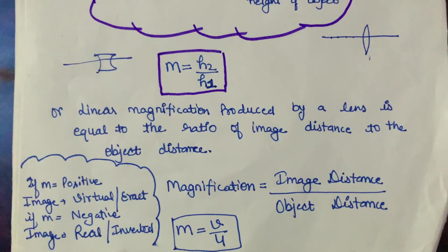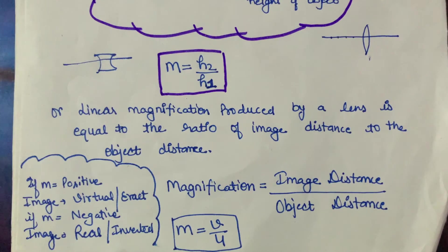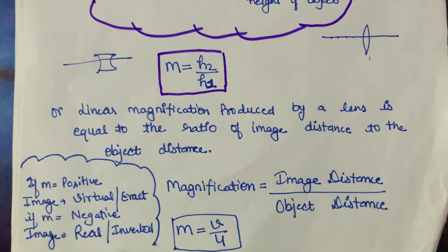So that was magnification, where we compare the size of the image and the object. I hope you understood. If there is any confusion, please write in the comment box. If you understood well, share it with your friends and subscribe to the channel. If you want to study any other topic or chapter, leave a comment and I will make a video on it. So that's it for today, take care.